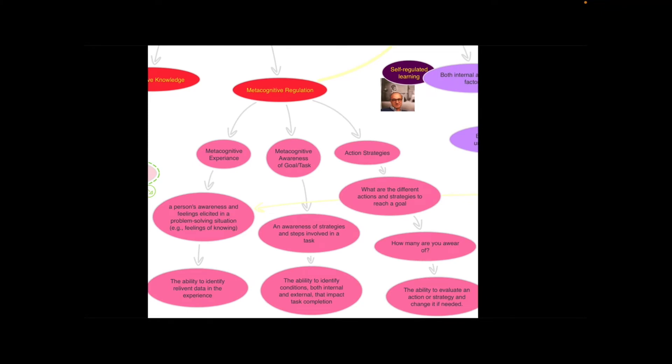The other aspect of metacognition is this idea of metacognitive regulation, which are the behaviors that you do to regulate yourself and make sure that you're doing correctly on a task. And originally Flavel had broken this down into three areas. But they've been unified in this one idea of metacognitive regulation.